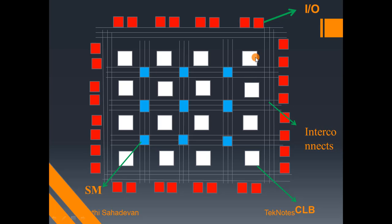Within each CLB, there are logic elements such as flip-flop, look-up table, full adder, counter, and multiplexer. Each CLB has multiple inputs — for example, 4 to 6 inputs — along with multiple input lines, output lines, and a clock pin.